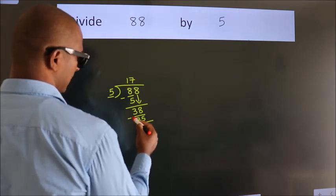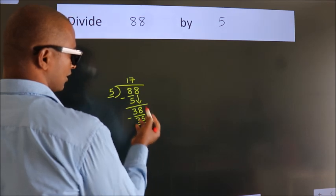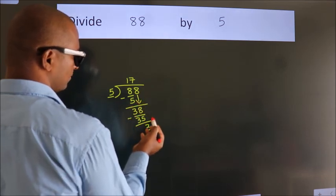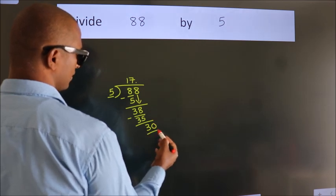Now we subtract and get 3. After this, no more numbers to bring down. So what we do is put a dot and take 0, making 30.